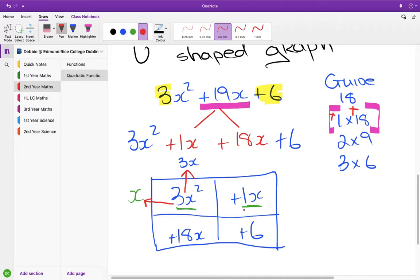Next one, 1x is made up of x and what? So that's 1. So 1 times x makes 1x. And then the last one is the 18, so the 18x is made up of 3x, and what else? So 3x times what makes 18x, and that's 6.